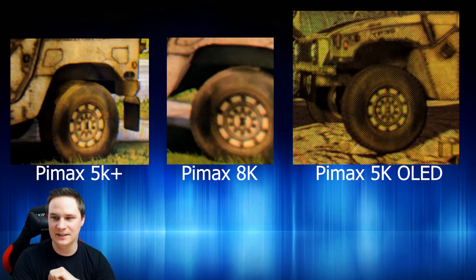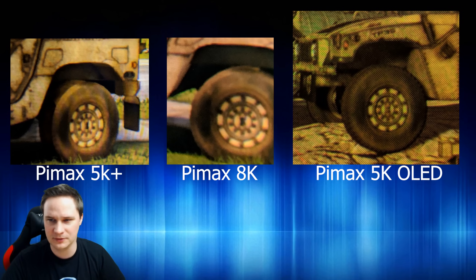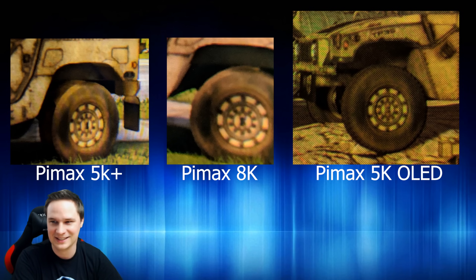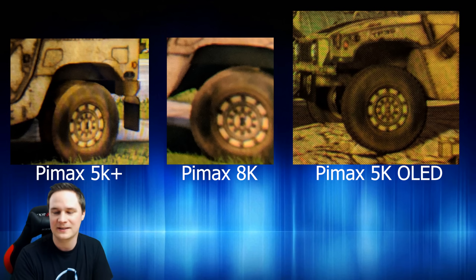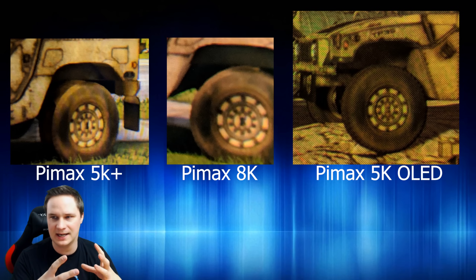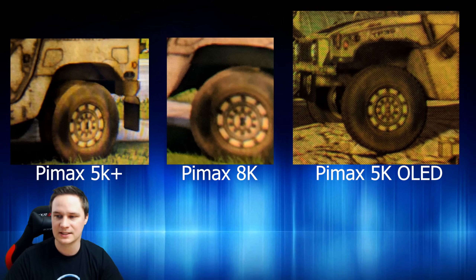Check this out — this is a scene from OnBoard. I tried to take a picture of the wheel of a Jeep. As you can see, this is the Pimax 5K Plus: everything seems fine, not much screen door effect. In the middle is the 8K — there's even a little less screen door effect. But on the right side is the OLED version, and you can see many many single dots. The screen door effect is much worse than on the 5K Plus and 8K. This is a normal scene — not very dark, not very bright, not much red — and even here the screen door effect is very visible.